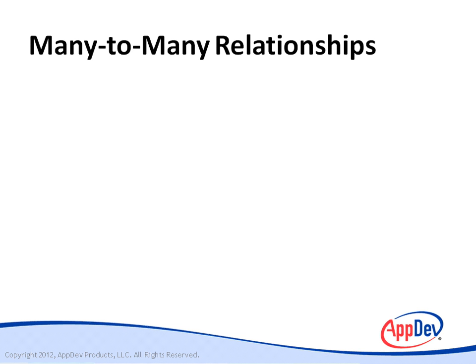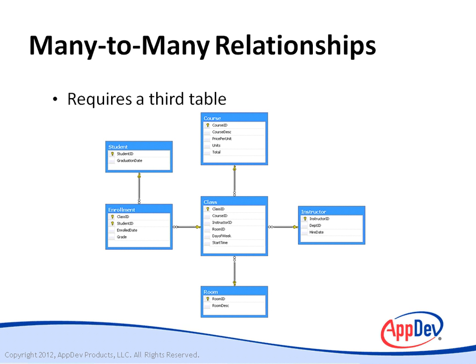Each student can enroll in many classes, and many students can attend each class — this is called a many-to-many relationship. You can represent it in the database only by using a third table. The enrollment table records the various pairings of students and classes. The primary key in the enrollment table is a composite key containing unique combinations of student ID and class ID values. The word 'many,' as used in database theory, really means zero or more up to infinity.